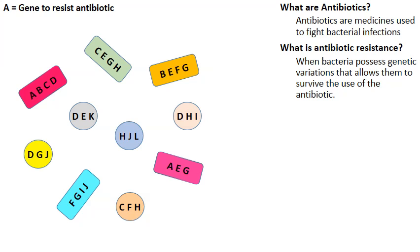Pretend these are bacteria you are infected with. The letters correspond to various genes they possess in their DNA. Bacteria are living organisms — they have DNA and genes. One gene to note is gene A. The bacteria that have gene A are going to be resistant to the antibiotic we're going to use to treat this person.